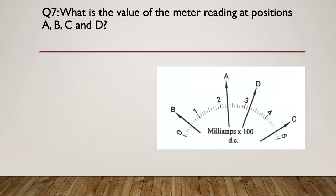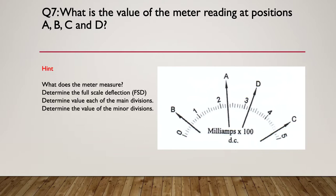Question seven. Again, what is the value of the meter readings at each of the positions A, B, C and D? Again, pause the video and have a go at those four readings. Here's the hint. Same as the last hint. What does the meter measure? What's it measuring in? Determine the full scale deflection, the FSD. Determine the value of each of the main divisions and each of the minor divisions. So pause here if you need to.